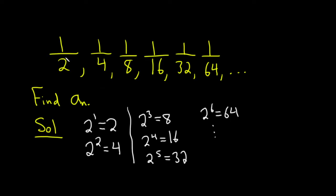So it looks like the denominators - the 2, the 4, the 8, the 16, the 32, and the 64 - all have the general form 2^n, where n equals 1, 2, 3, and so on.